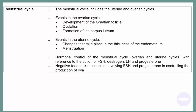Another thing we must know is the menstrual cycle. We must be able to explain the menstrual cycle, which includes the uterine and ovarian cycle. There is a separate video where everything is explained in full — from development of the Graafian follicle and ovulation, to formation of corpus luteum and the changes in the thickness of the endometrium and menstruation.